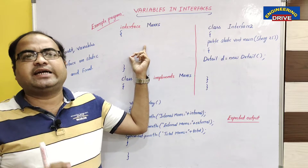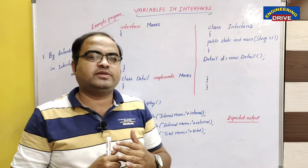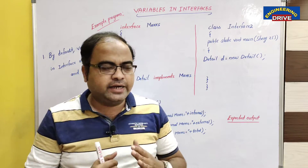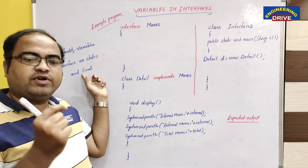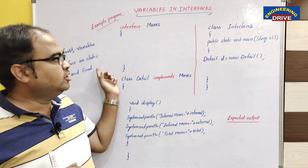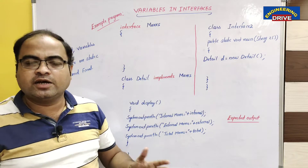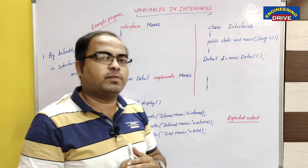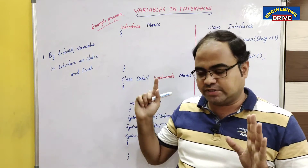What is the meaning of static? A static variable is nothing but one which cannot be accessed with the help of an object. And a final variable is nothing but one whose value cannot be changed once it is assigned. So once we assign the value to the variable, we can't change that value. This is final.